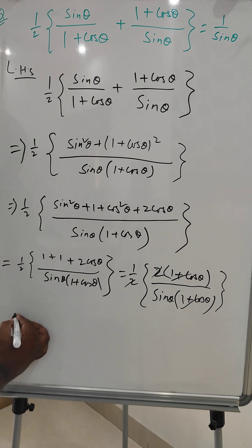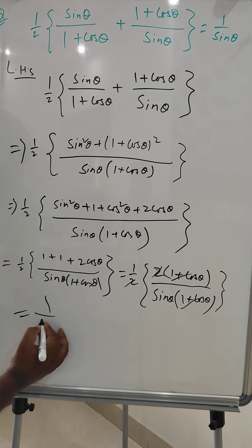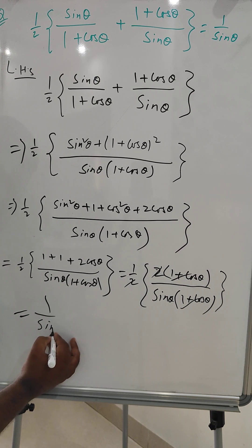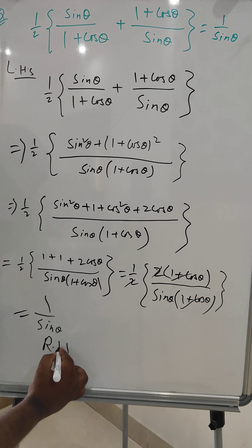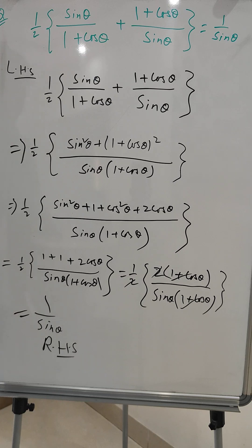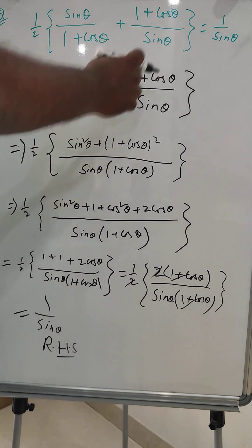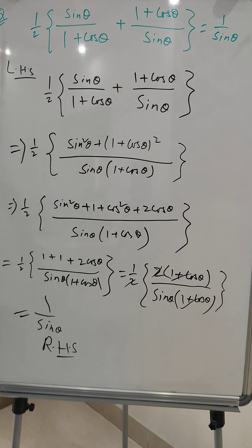After cancelling (1 + cos theta), we get 1/sine theta, which is RHS. So this RHS and LHS both are same, hence proved. Thank you for watching, please like and subscribe.